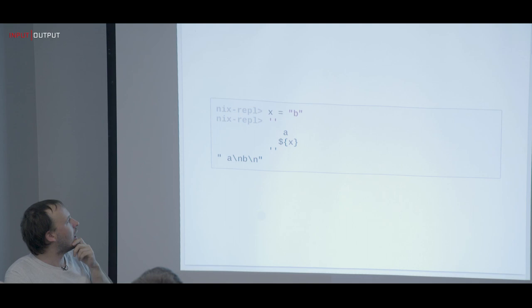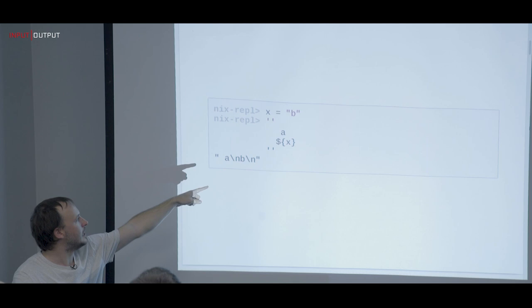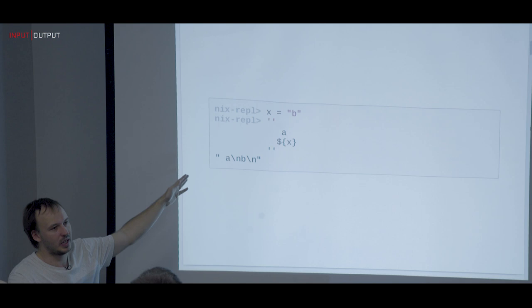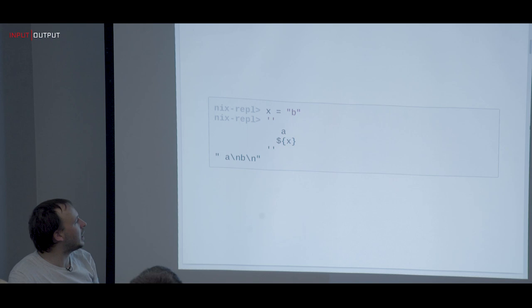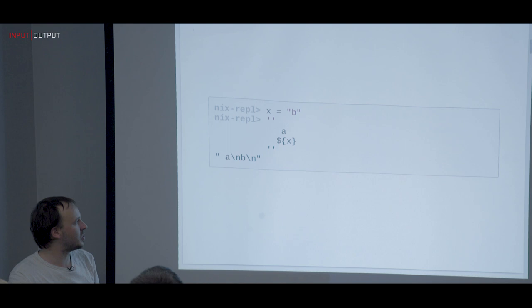Then there are single-double-single quoted strings, which strip out all the indentation. Basically, it takes the most leftward part of the string and strips everything out — including the prefix, while keeping the suffix newlines. This is nice so that when you build make expressions and nest them in your editor, you don't have to manually strip indentation, since in configs you don't want that extra indentation.